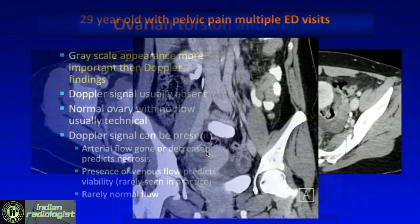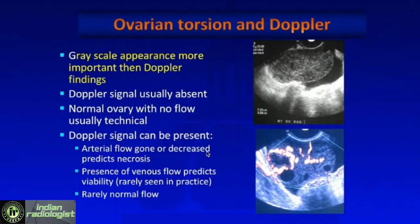This is to say that the Doppler findings in ovarian torsion are variable. Oftentimes there is no flow, of course, but sometimes you may have a little bit of flow. And in one case — the only one I've seen — a patient with recurrent pelvic pain had an ovary that looked exactly like ovarian torsion, but she had increased flow. I told the gynecologist it still looks like ovarian torsion; I don't understand why she has increased flow. She went to the OR and the ovary was indeed torsed, but it was likely torsion-detorsion, and there was some reactive hyperemia.